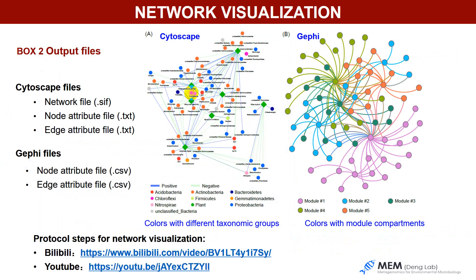After the analysis, users can use the output files to plot their networks with Cytoscape and Gephi software. For Cytoscape, three files can be found in INAP. For Gephi, two files can be found. We also provided a short video to show how to plot these networks in Cytoscape and Gephi. The video links are provided here.